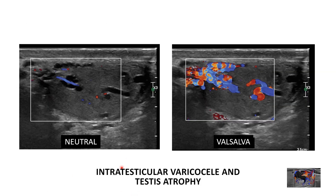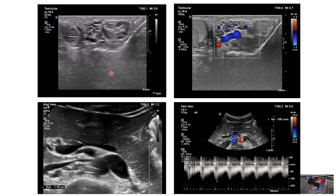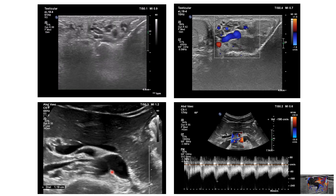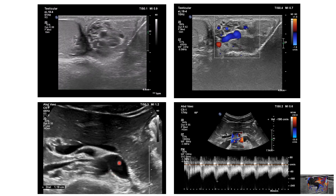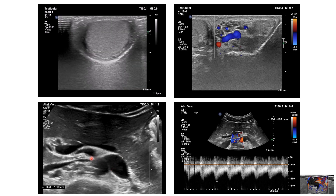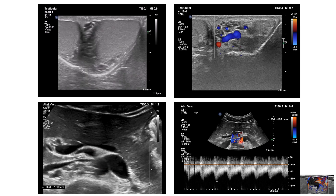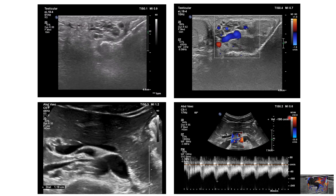Here is an example of intratesticular varicocele with dilated tubular veins inside of the testis and testicular atrophy. You can see the veins are filled during the Valsalva maneuver. This is an adolescent male with varicocele where the cause is nutcracker phenomenon. The left renal vein is enlarged due to compression between the superior mesenteric artery and the aorta, and you can see turbulence in the vein and increased velocities.